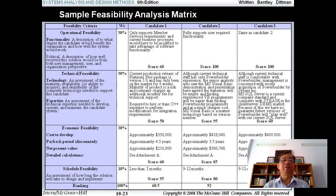You see a sample feasibility analysis matrix. You see here operational feasibility, and you have three candidates. You can see operational feasibility, the description of to what degree the candidate would benefit the organization and how well the system would work. Candidate one only supports the member services requirement, and current business processes would have to be modified to take advantage of software functionality. Candidate two fully supports user-required functionality. Candidate three is same as candidate two. You can mark scores. Candidate one is a score 60 only. Candidate two and candidate three is a score 100, a little bit higher than candidate one.